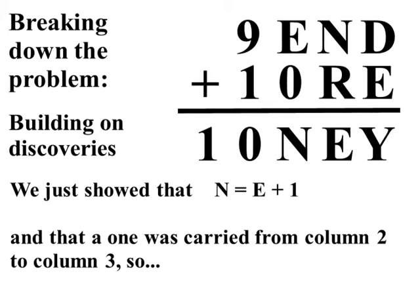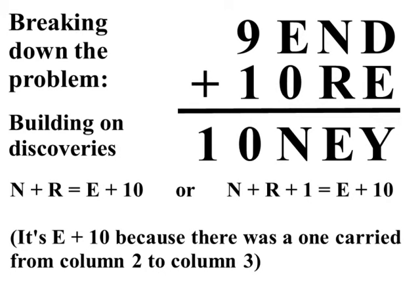Let's go back to N equals E plus 1 and the fact that a 1 was carried from column 2 to column 3. So, we know that when we add N plus R we have to carry a 1 over to the next column. Therefore, N plus R equals E plus 10.